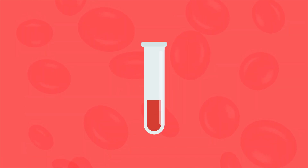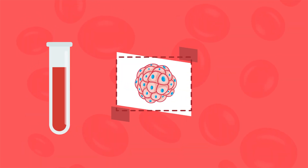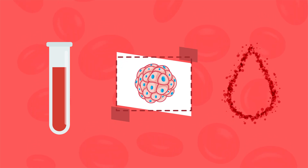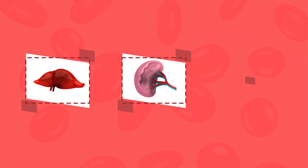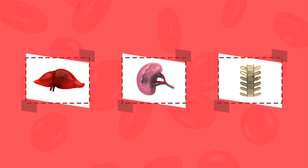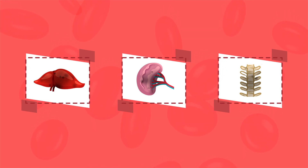Normally, most ferritin is found inside of cells with only a small amount in the blood. However, ferritin levels can become elevated when an organ that contains much ferritin is damaged, such as the liver, spleen, or bone marrow, even though the total amount of iron in the body is normal.